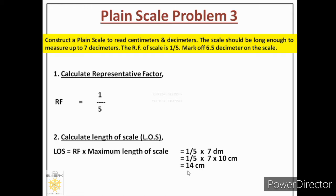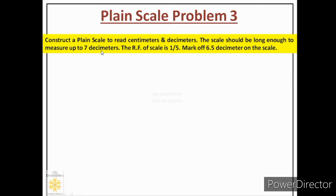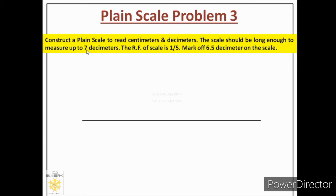A line of 14 centimeters on the paper will actually represent 7 decimeters. So let us construct the scale. We will draw a line of 14 centimeters representing 7 decimeters. Since we are drawing a plane scale, we have to divide this line into equal parts. From the previous lectures, the thumb rule is: if the maximum length of the scale is up to 10 or less than 10, make the same number of parts. Since the maximum length is 7 decimeters, we will divide this line into 7 parts.